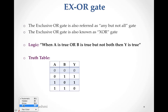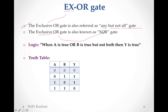Now XOR gate. XOR stands for exclusive OR. It is referred to as 'any but not all' gate. Its logic: when A is true or B is true but not both, then Y is true. So either A is true or B is true - but not both together - then Y will be true.